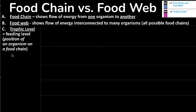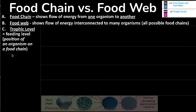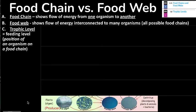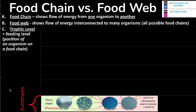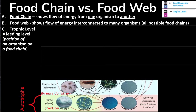Trophic levels are the feeding levels we'll use to describe where organisms fit in the ecosystem. Starting at the bottom, the first level is the producer level — these are photosynthetic plants, referred to as autotrophs, meaning self-feeders. All arrows show the flow of energy to the next organisms, the primary consumers. We can see phytoplankton with an arrow showing energy flowing to zooplankton. Primary consumers are referred to as herbivores because they eat plants.